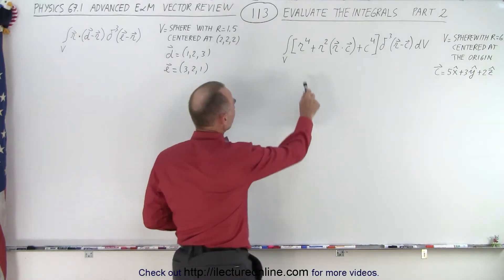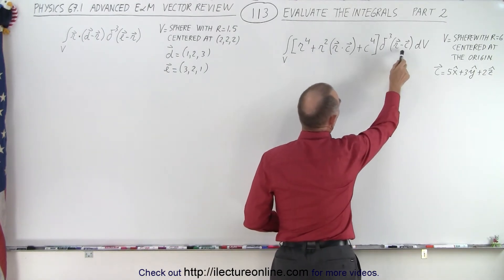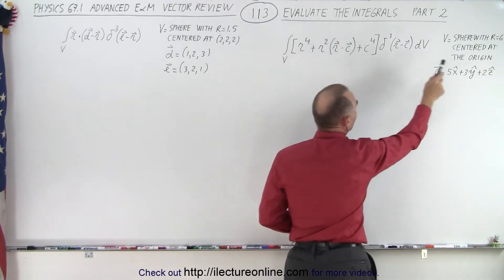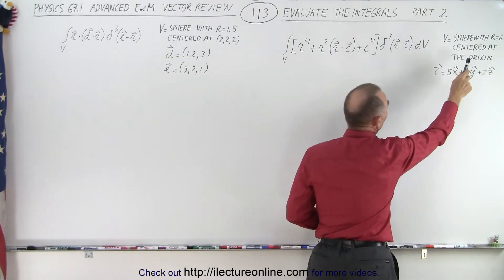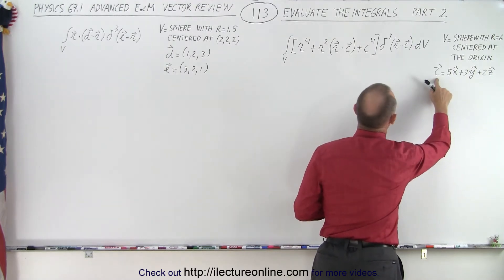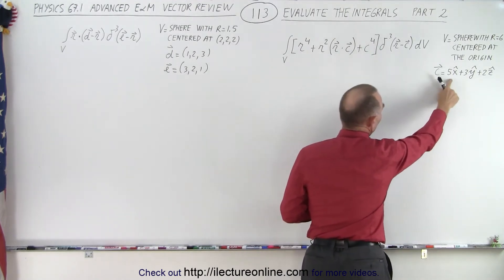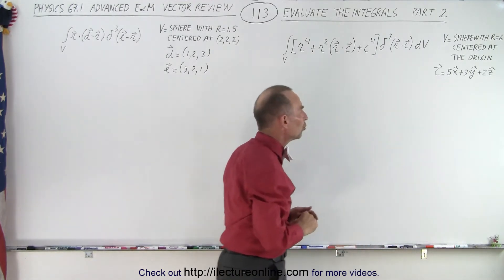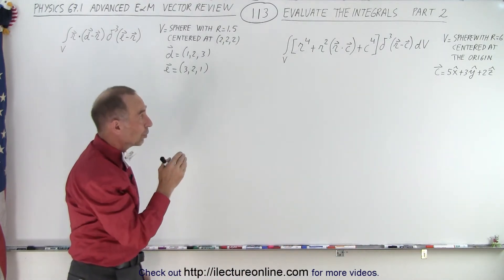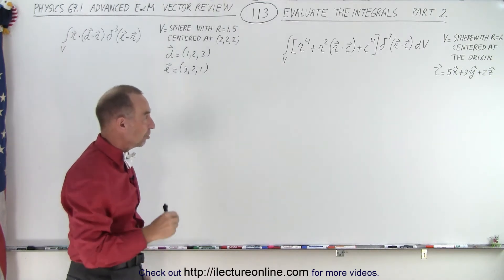Here we have an integral. The function is defined right here and the delta function is r minus c. The volume over which we're going to integrate is defined as a sphere with radius equal to 6 centered at the origin. The c vector is defined as 5x̂ plus 3ŷ plus 2ẑ. The first thing we need to do is make sure that the delta function resides within the volume of integration.